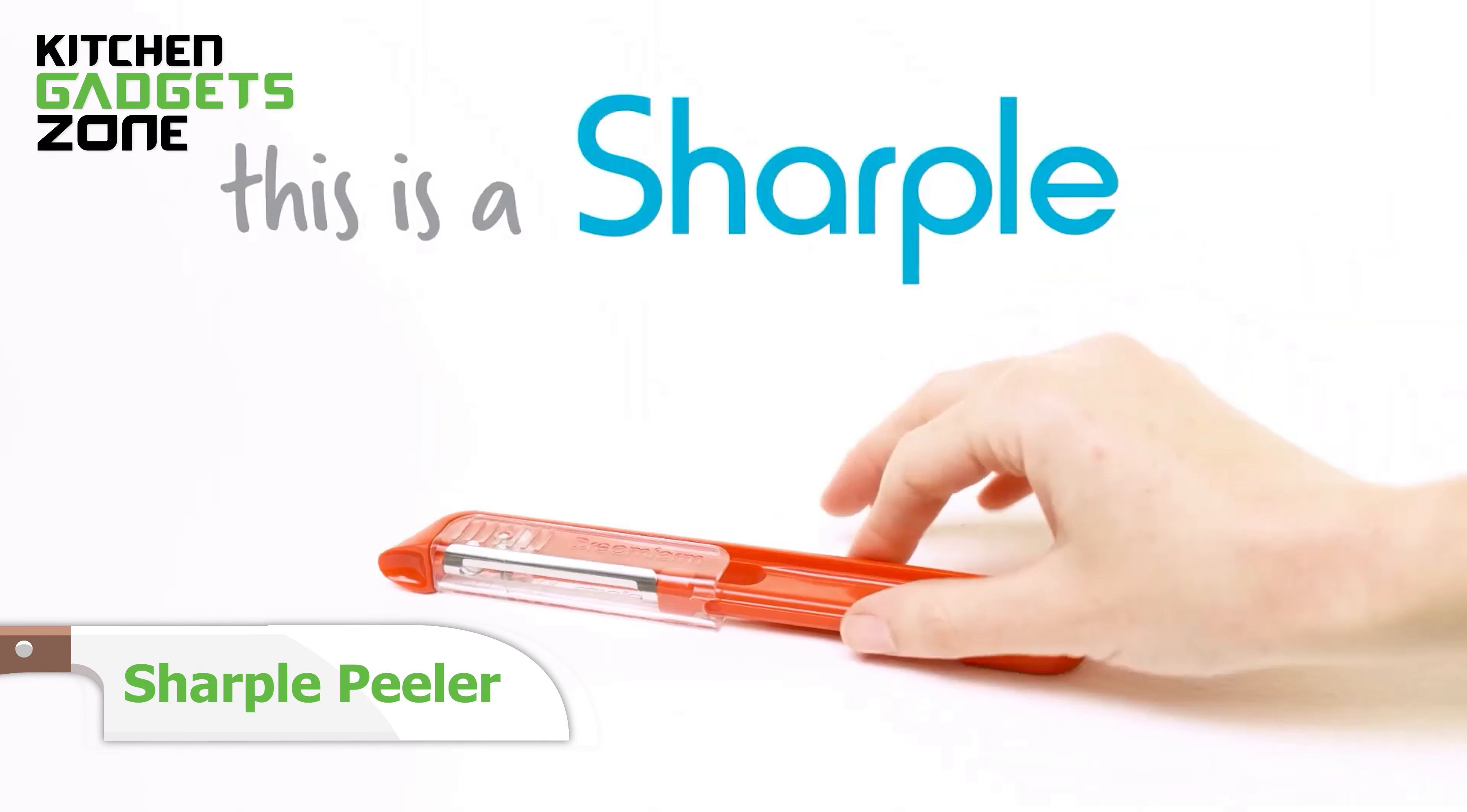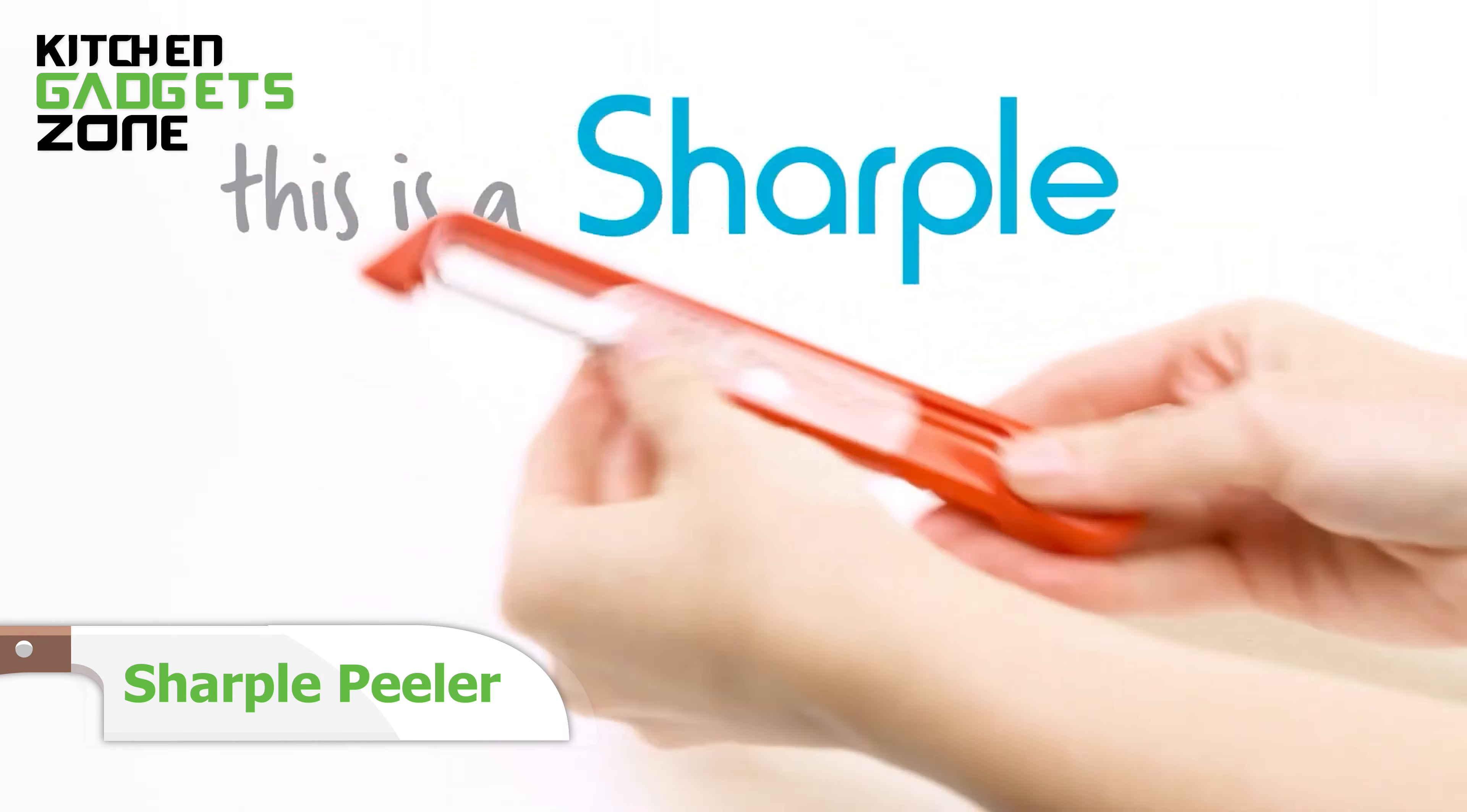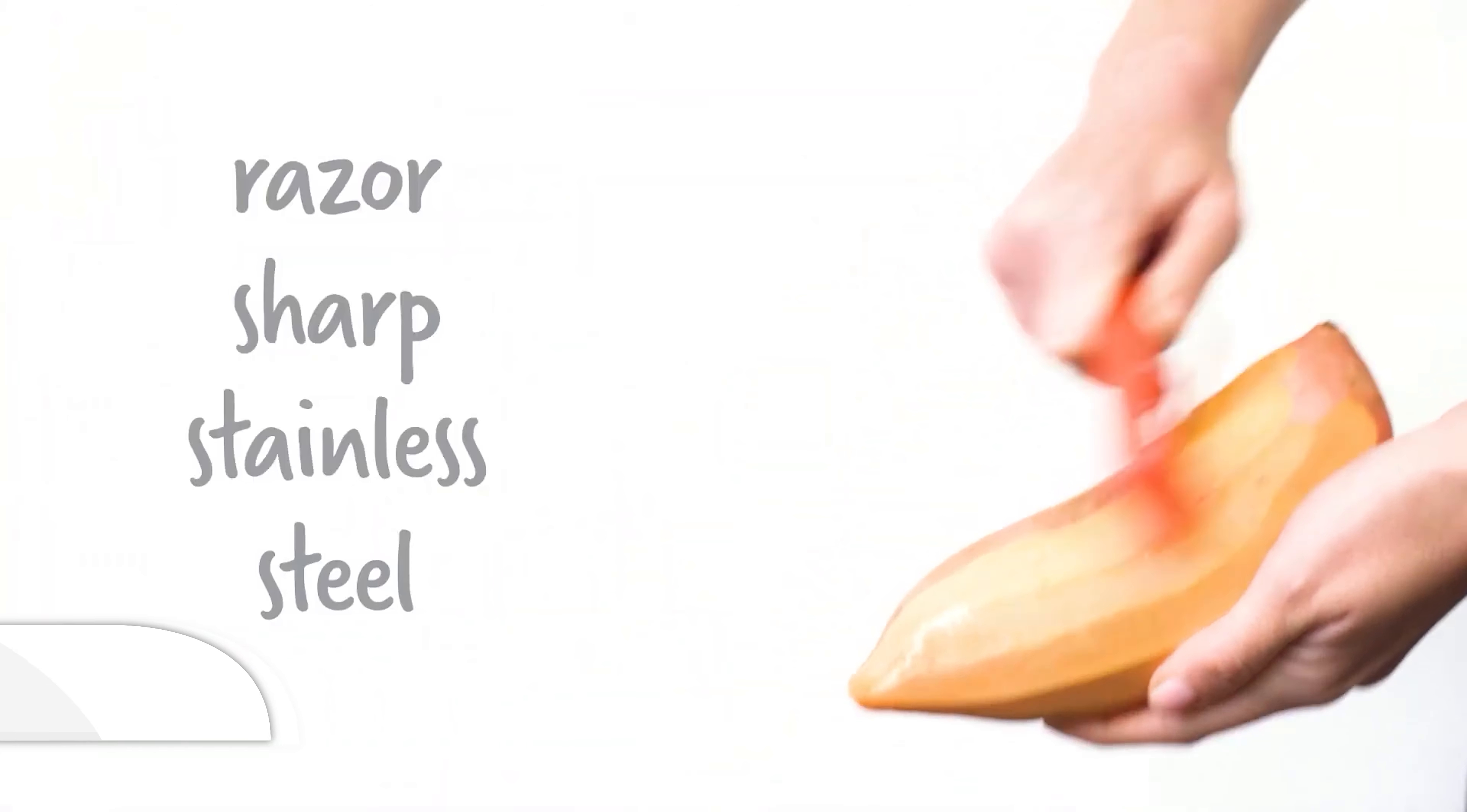Kiss dull, ineffective peelers goodbye, and say hello to the Sharple Peeler. This kitchen gadget is a true game-changer, featuring a razor-sharp Japanese stainless steel blade designed to last a lifetime.